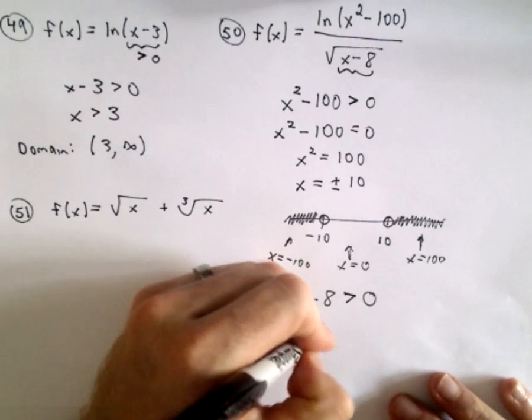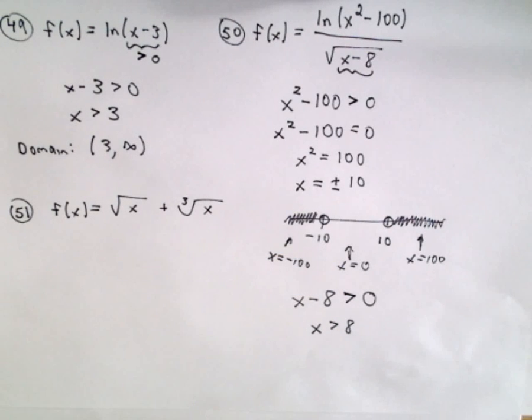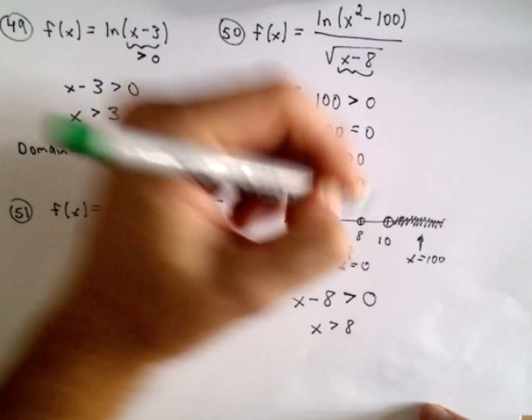Well, if we solve this, we just get that x has to be greater than eight. Okay, so here's positive eight. It has to be strictly greater than that.